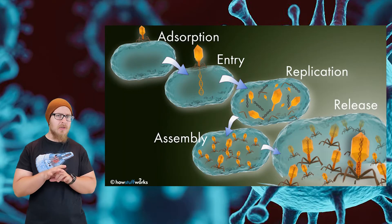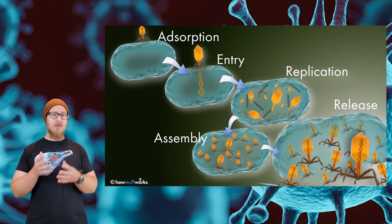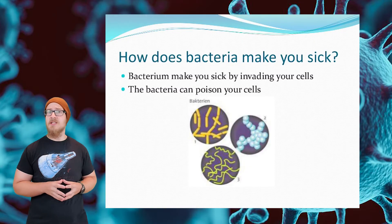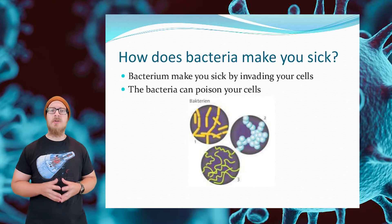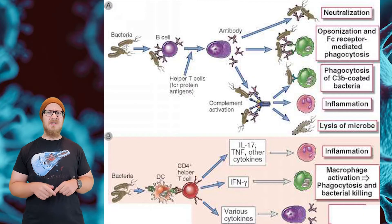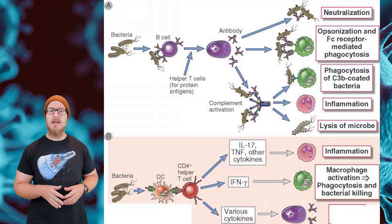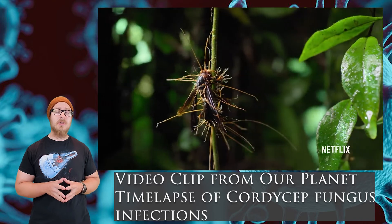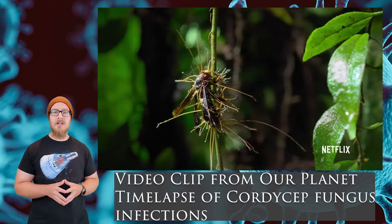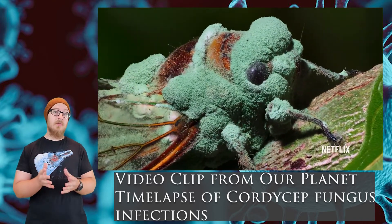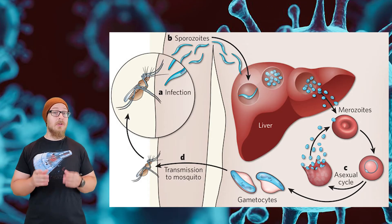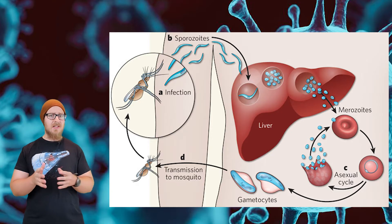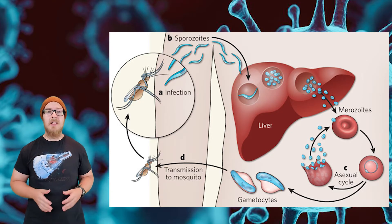Viruses act by entering your cell and hijacking your cell's machinery to make copies of themselves. Bacteria cause disease by excreting toxins when they enter your body. Fungi can make you sick by invading cells and disrupting their functions, or by acting like parasites, consuming energy and nutrients otherwise needed by their host. Protozoans, which are single-celled eukaryotic organisms, cause disease in a similar way, acting as parasites and damaging your body tissues.